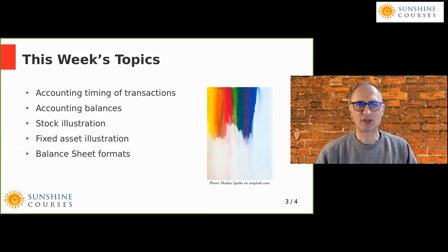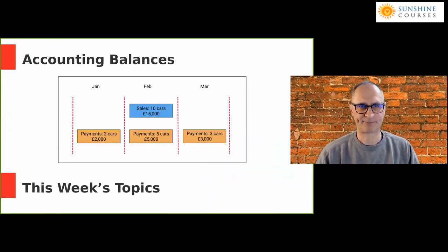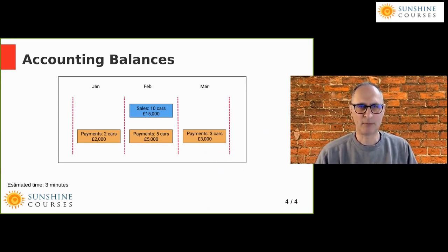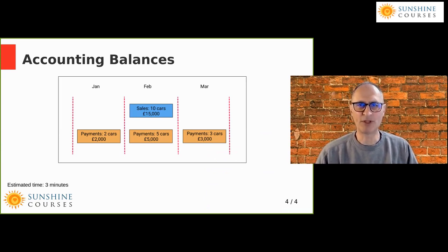The account timing of transactions and accounting balances are really quite connected. This is an example of a car trader - someone who buys cars and sells them over a three-month period: January, February and March. What I want to try and do is to bring to life this concept of accounting periods and to illustrate how the matching is such a significant part of what we're doing, both in terms of the profit and loss account, but also the balance sheet.